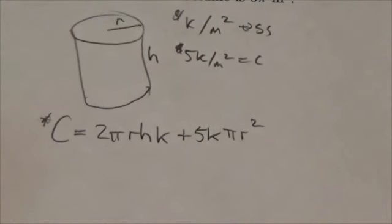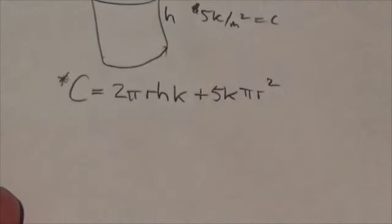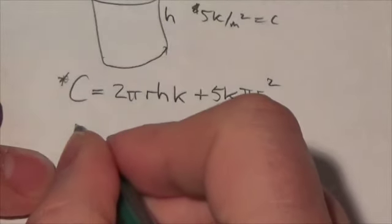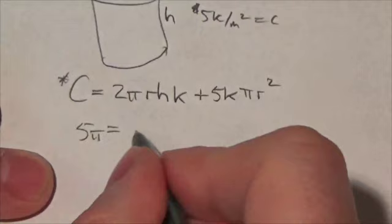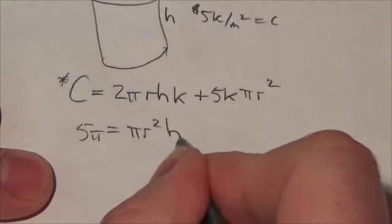We are, however, given one other bit of information to help us link these variables together, and that is this, that the volume is 5π, because the volume of a cylinder will be πr²h.